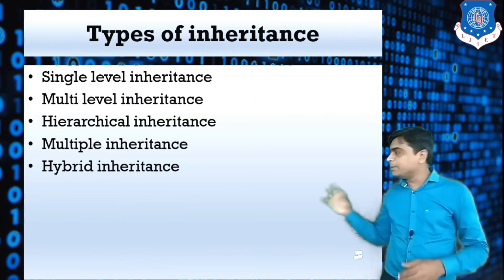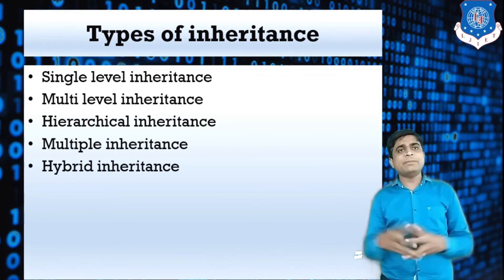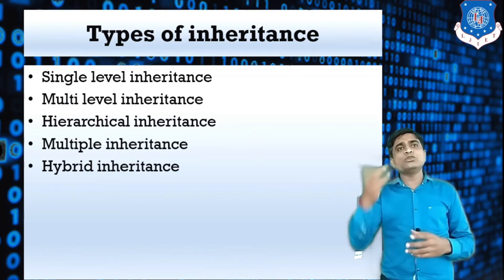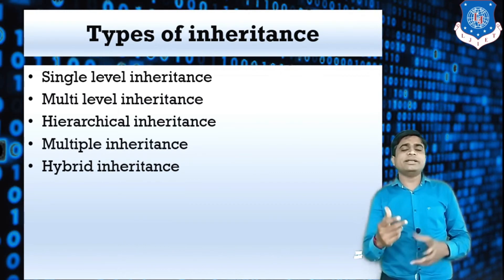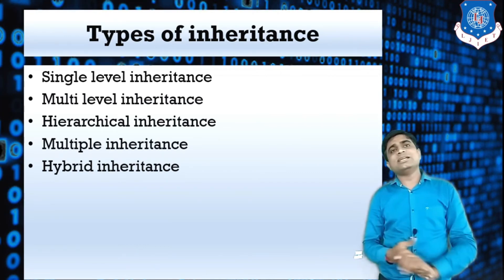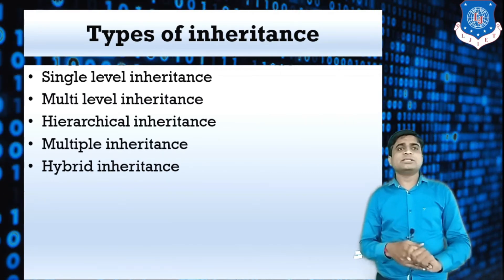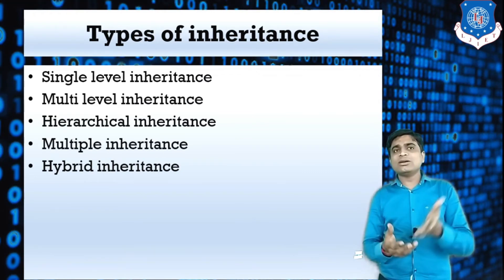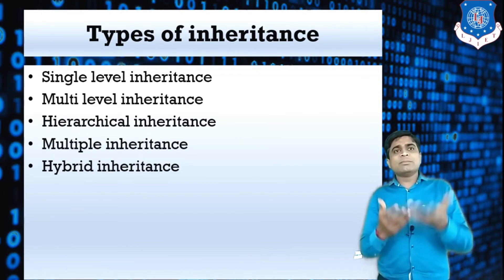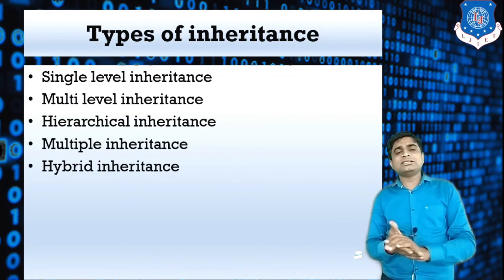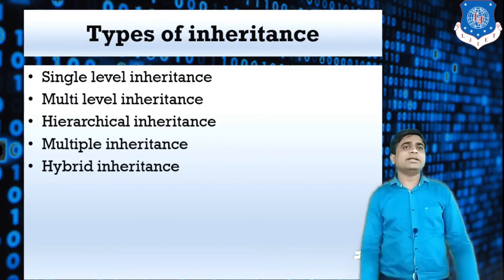Hybrid inheritance combines any two types of inheritance. Any two combinations — for example, single and multiple, or multi-level and hierarchical — is called hybrid inheritance.